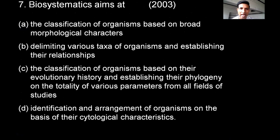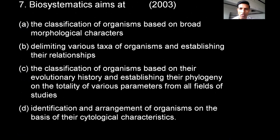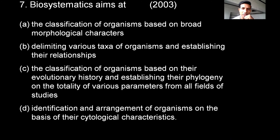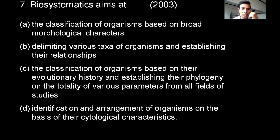Biosystematics aims at: Option A: Classification of organisms based on broad morphological characters. Option B: Delimiting various types of organisms and establishing their relationships. Option C: Classification of organisms based on their evolutionary history and establishing their phylogeny on the totality of various parameters from all fields of studies. Option D: Identification and arrangement of organisms on the basis of their cytological characters. The correct option is C.